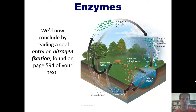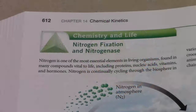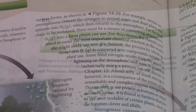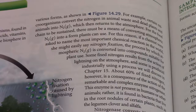I'd like to conclude this video by reading a specific section on nitrogen fixation directly from our text, just because I think it's super cool. It says: nitrogen is one of the most essential elements in living organisms, found in many compounds vital to life, including proteins, nucleic acids, vitamins, and hormones. Nitrogen is continually cycling through the biosphere in various forms, as shown in Figure 14.23. For example, certain microorganisms convert the nitrogen in animal waste and dead plants and animals into N2 gas, which then returns to the atmosphere. For the food chain to be sustained, there must be a means of converting atmospheric N2 into a form plants can use.